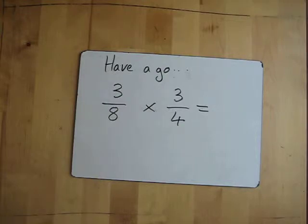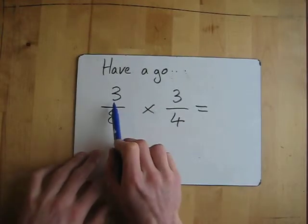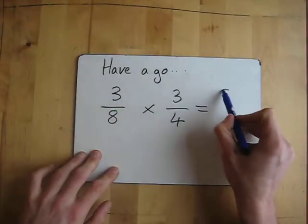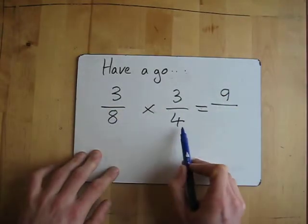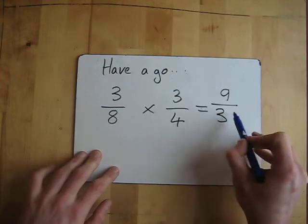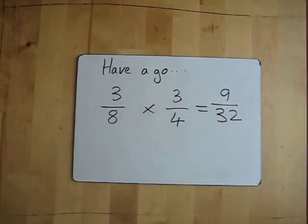I'm going to go through the answer in three seconds. Three, two, one. So we've got three times three for the top, eight times four for the bottom. Eight times four gives me thirty-two. Easy as that.